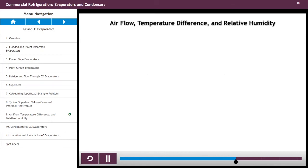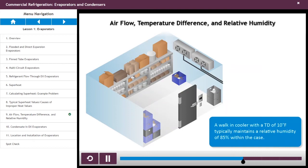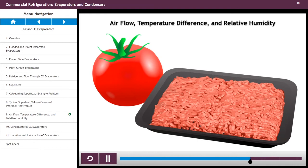A walk-in cooler with a TD of 10 degrees Fahrenheit typically maintains a relative humidity of 85% within the case. The high humidity is good for storing meat and produce, so it does not get dried out.